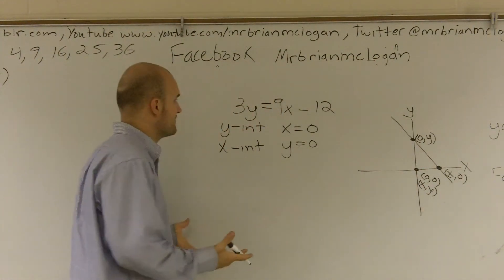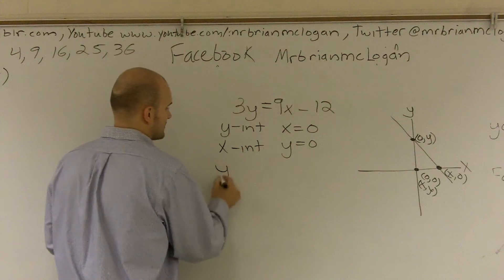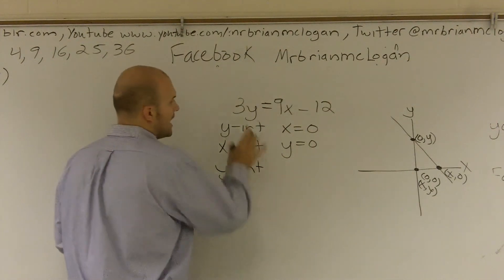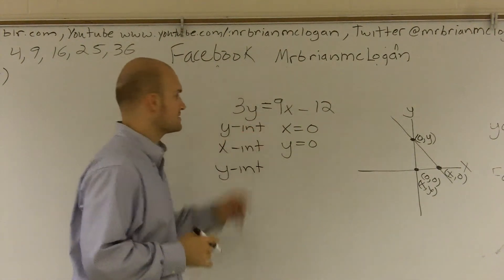I don't have a y there anymore, because remember, all coordinate points are x, y. So if I have a zero for one of these, I know that that value is zero. So what I'm going to do now is, if I want to find the y intercept, I'm going to plug zero in for x.